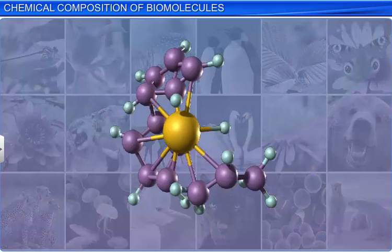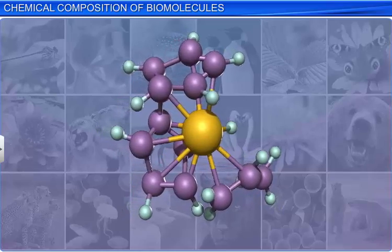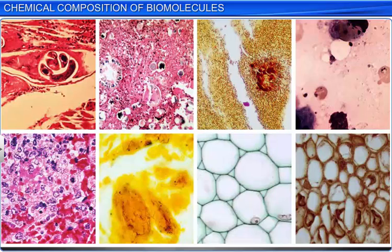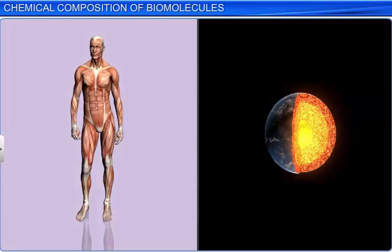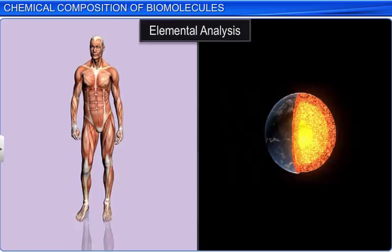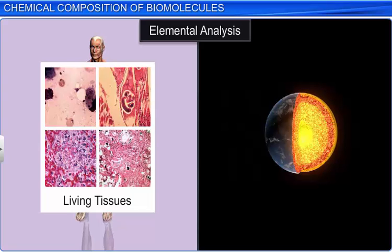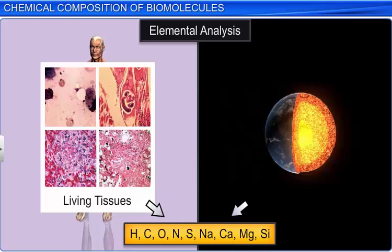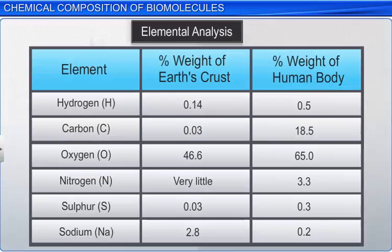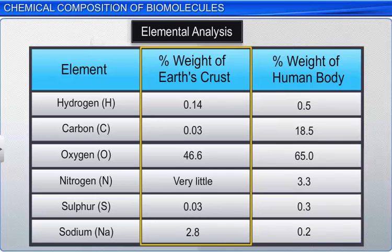Every living organism is composed of chemicals which can be either elements or compounds. The elemental composition of living tissues can be determined by following a technique known as elemental analysis. Interestingly, we obtain similar elements while doing an elemental analysis of different living and non-living things. For example, we find that elements such as carbon, hydrogen, and oxygen are common to the earth's crust as well as living tissue. However, the composition of these elements is much higher in a living organism compared to the earth's crust, as shown in this table.